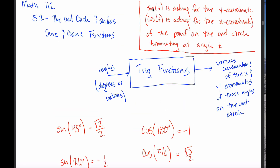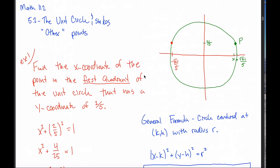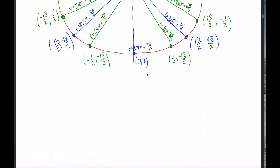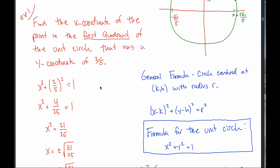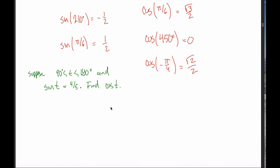The big takeaway is that the sine function is just asking for the y-coordinate of the point on the unit circle that terminates at angle t. Similarly, the cosine of t is asking for the x-coordinate of the point on the unit circle terminating at angle t. Often we're interested in the 16 special points we memorized off the unit circle, but it's worth pointing out that other questions can also be done using sine and cosine.